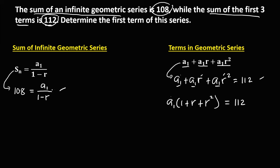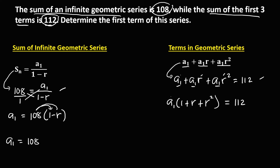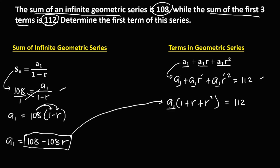From this equation, we need to solve for a sub 1, so we use cross multiplication. This is over 1, so 1 times a sub 1 equals a sub 1, which equals 108 times 1, that's 108, plus 108 times negative r, that's negative 108r. So a sub 1 equals 108 minus 108r.